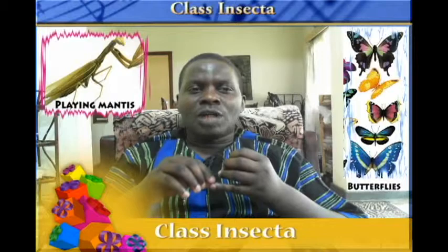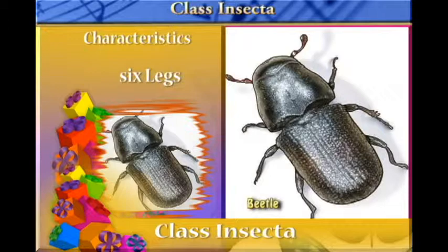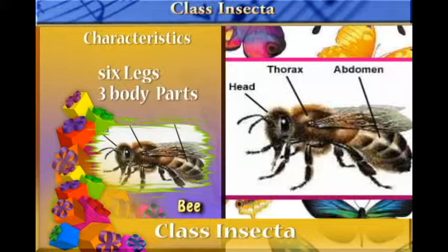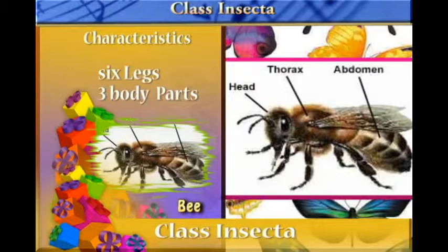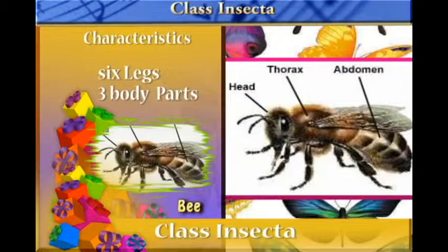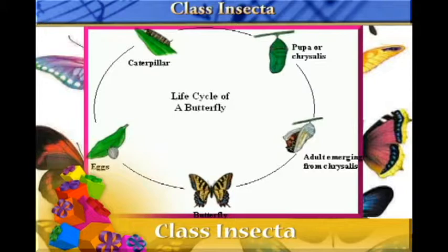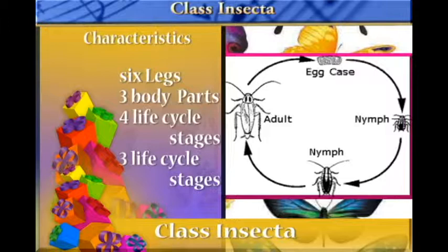To summarize, class Insecta organisms have three pairs of legs and their body is divided into three sections: the head, the thorax, and the abdomen. Some have a four-stage life cycle and others have a three-stage life cycle. Breathing is carried out via the tracheal system.